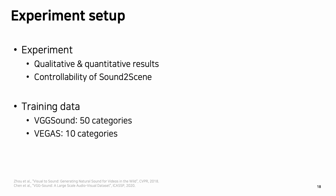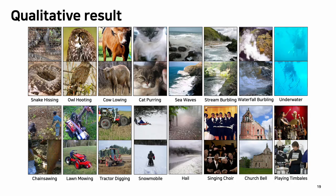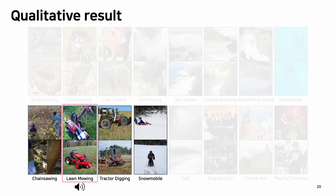I will now present qualitative and quantitative results and the controllability of Sound-to-Scene. For training, we use a subset of VGG Sound and Vegas dataset, consisting of 50 and 10 categories respectively. The model can take diverse sound categories — including animals, water sounds, or engine-related sounds — and generate realistic images. For example, given lawn mowing sound and tractor-digging sound, these sounds are confusing to humans, but the model can distinguish between them and generate distinct images accordingly.